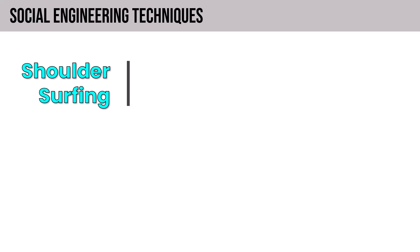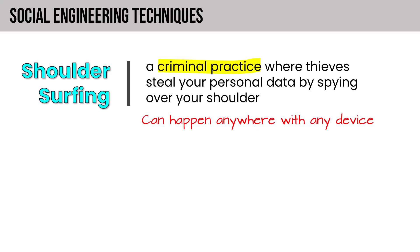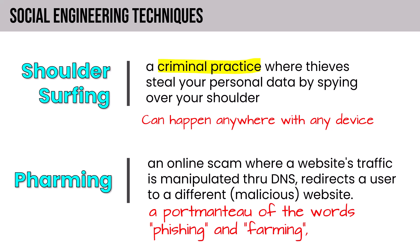Shoulder surfing is a criminal practice where thieves steal personal data by spying over your shoulder. Users must be aware it can happen anywhere on any device — in the office with a consultant or visitor, at a coffee shop, on a computer or phone. Pharming is an online scam where a website's traffic is manipulated through DNS, redirecting the user to a malicious website — a portmanteau of phishing and farming. That covers the foundational background; now let's shift to the items in the syllabus.